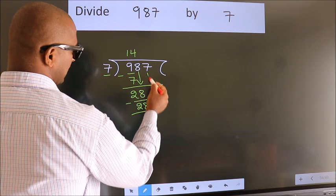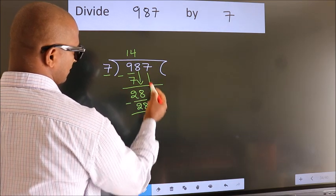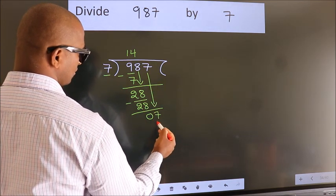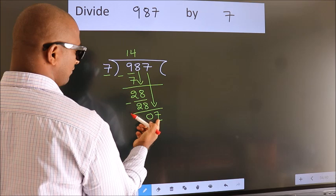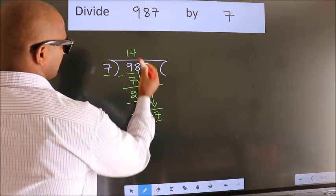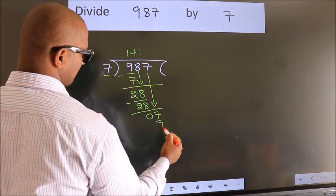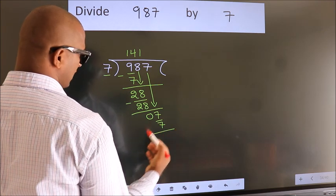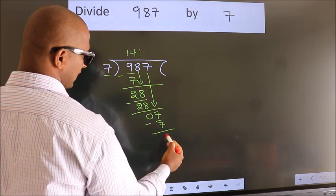After this, bring down the beside number. So, 7 down, making 7. When do we get 7 in the 7 table? 7 once, 7. Now we subtract. We get 0.